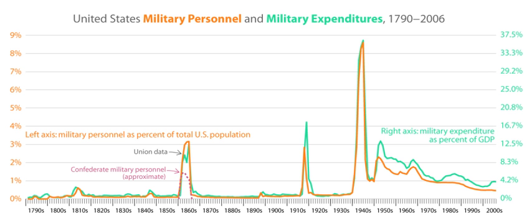The so-called Polar Bear Expedition was the involvement of 5,000 U.S. troops, during the Russian Revolution, in blocking the Bolsheviks in Arkhangelsk, Russia, as part of the greater Allied military expedition in the Russian Civil War.